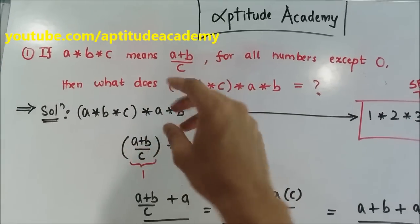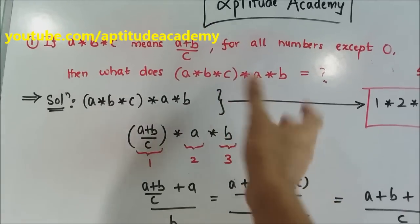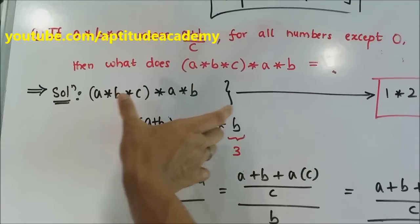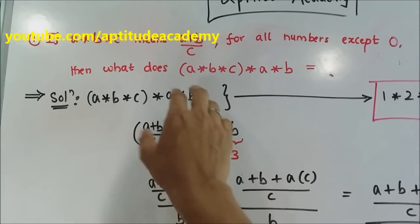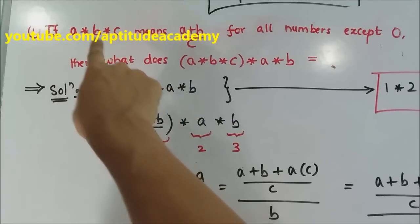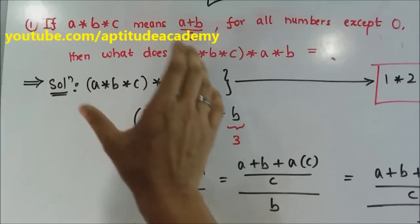In an entrance exam, you will need to solve these sums very fast. So they have given you that you have to solve A into B into C into A into B. You will get confused here because A is B and B is C. So what is the speed trick?